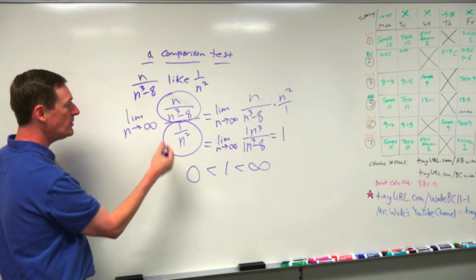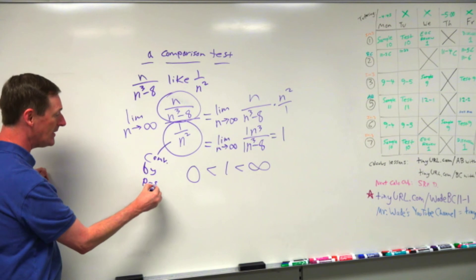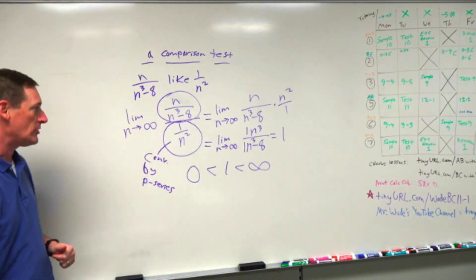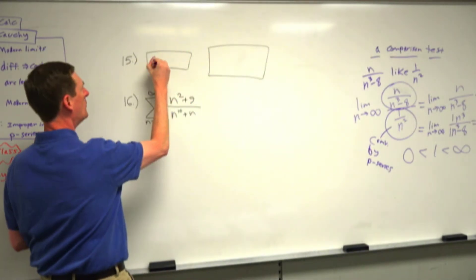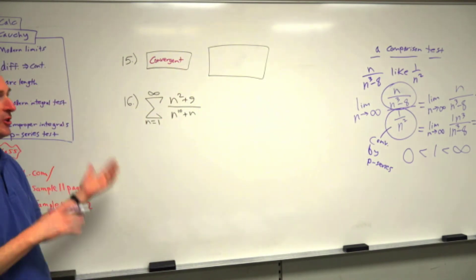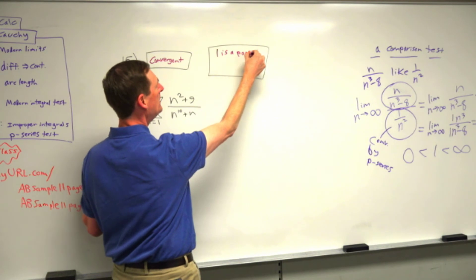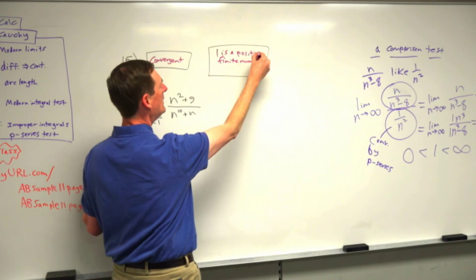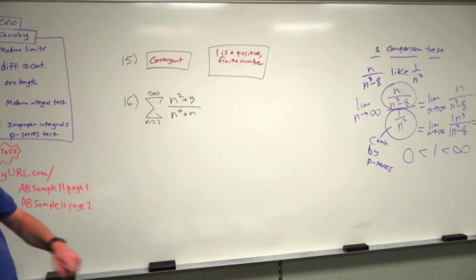One over n squared is a well-known convergent series by the p-series test, so the given series is also convergent. In the box put 'convergent.' In the because box: one is a positive finite number — that tells me you did the correct comparison and got a valid result.